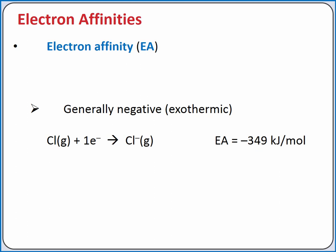Electron affinity is the energy released when an electron is added to a gaseous atom or ion. Electron affinities are generally negative, that is exothermic, because energy is generally released when an electron is added.